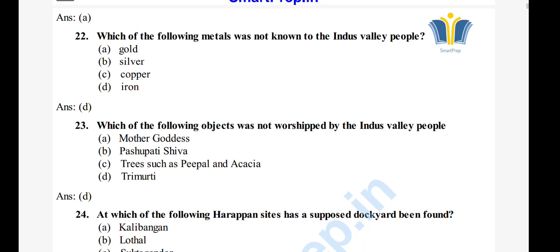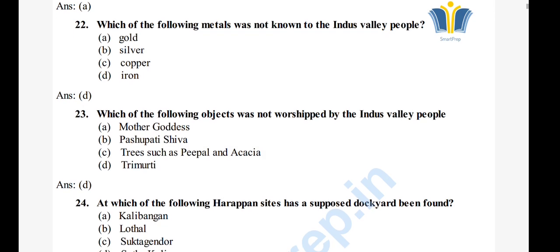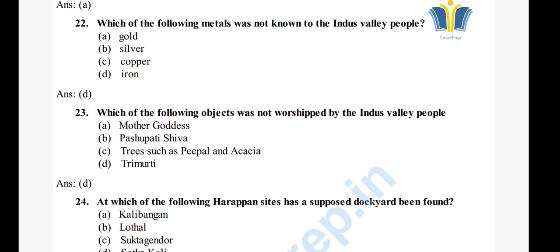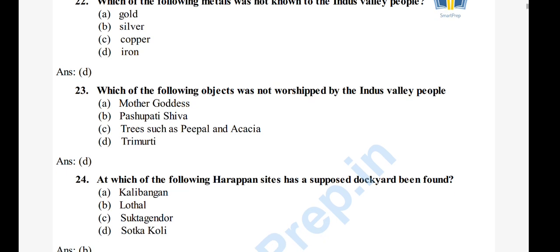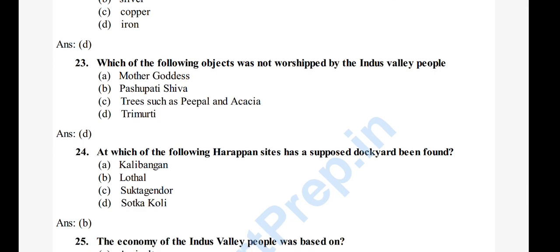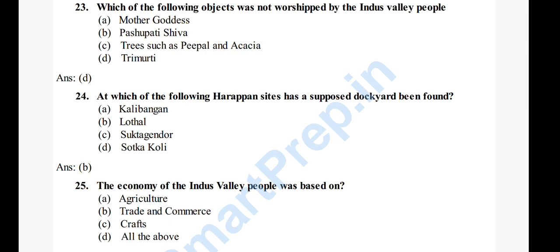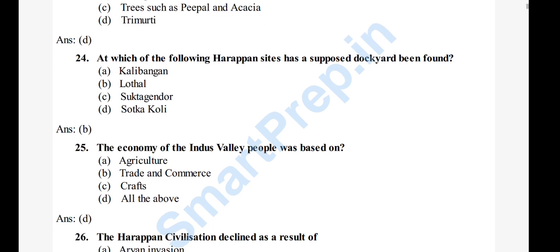Question 24: Which of the following Harappan sites has been supposed to be found? Question 25: The economy of the Indus Valley people was based on — A) agriculture, B) trade, C) commerce, D) crafts, E) all of the above. The right answer is option D, all of the above.